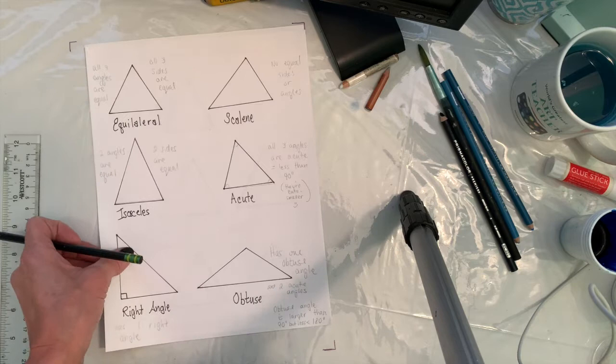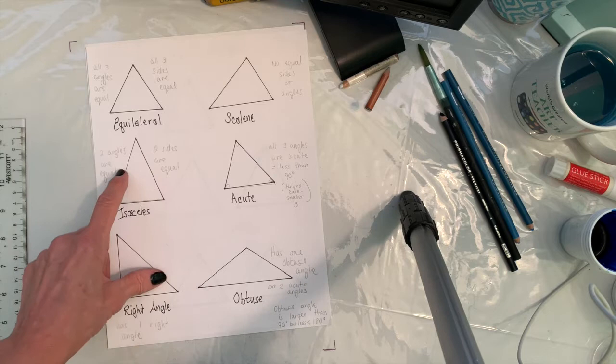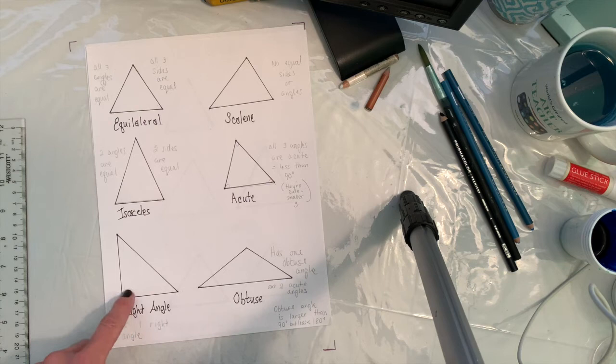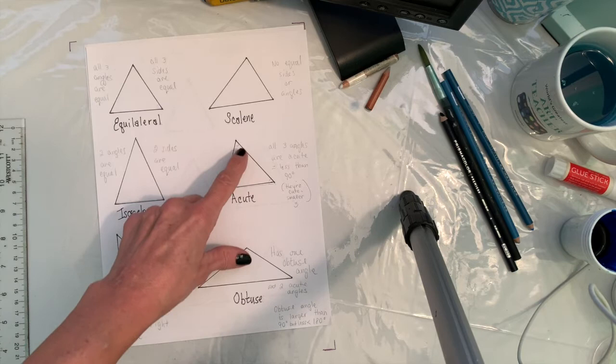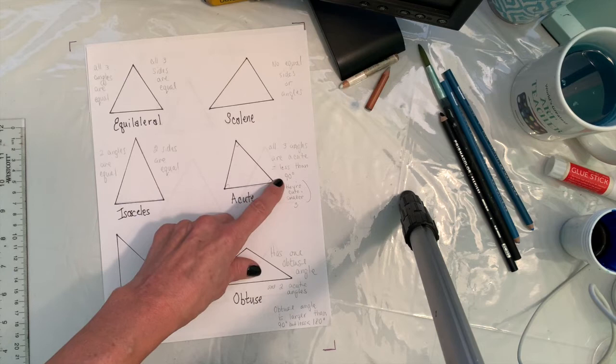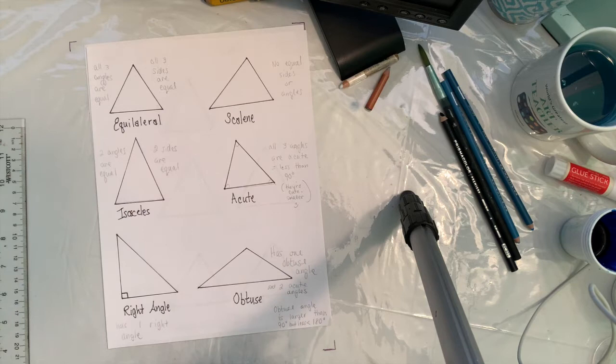First we have to talk about triangles. Equilateral triangles have three equal sides and three equal angles. Isosceles triangles have two equal angles and two equal sides. Right angle triangles have one right angle. Scalene triangles have no equal sides or equal angles. Acute triangles have all three angles less than 90 degrees — a good way to remember it is the word 'cute' meaning smaller.